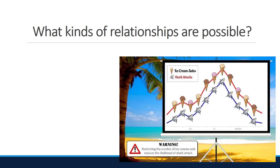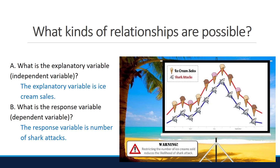Let's identify the explanatory and response variables for this example. The explanatory variable is ice cream sales, and the response variable is the number of shark attacks — this is because we're using ice cream sales to explain the number of shark attacks. By looking at the plot, notice that ice cream sales and number of shark attacks exhibit a similar pattern over time. This is an example of an association.